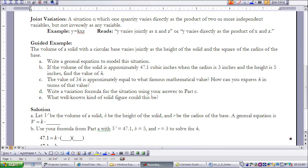So an example of that might be Y equals K times XZ, which would be read as Y varies jointly as X and Z, or Y varies directly as a product of X and Z.